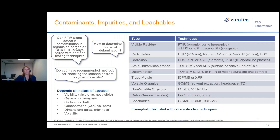I think we'll start with sort of our bread and butter. A lot of the failure investigations that we get are related to contaminants, impurities, and leachables. We have a wide array of techniques that are commonly used for evaluating different types of species, and it really depends on the nature of the species — whether it's something that you can see with the naked eye.